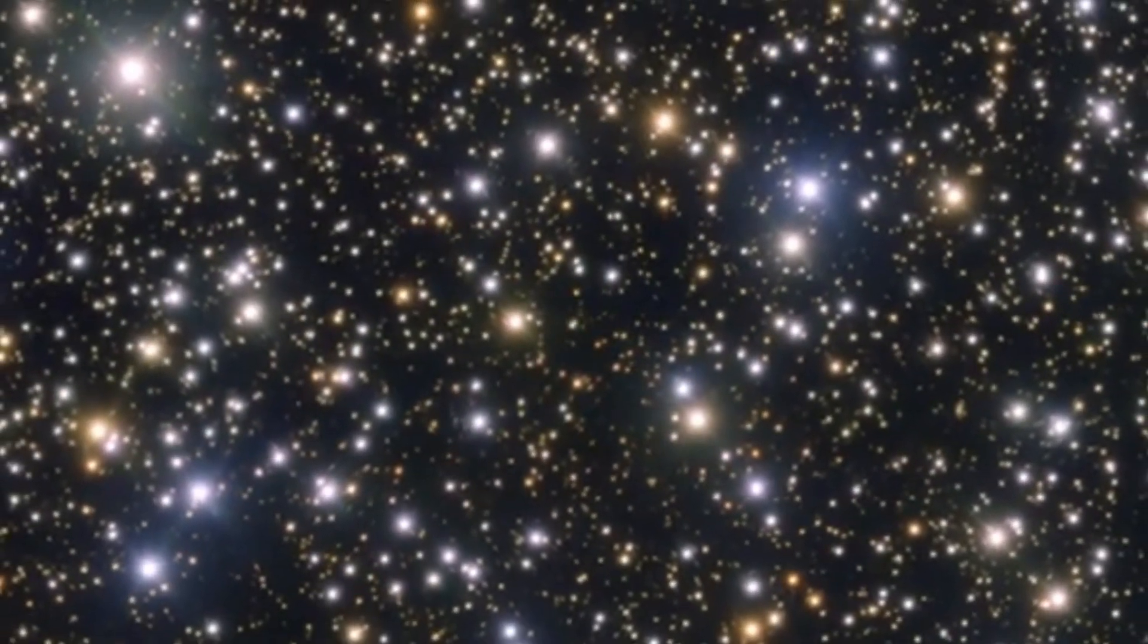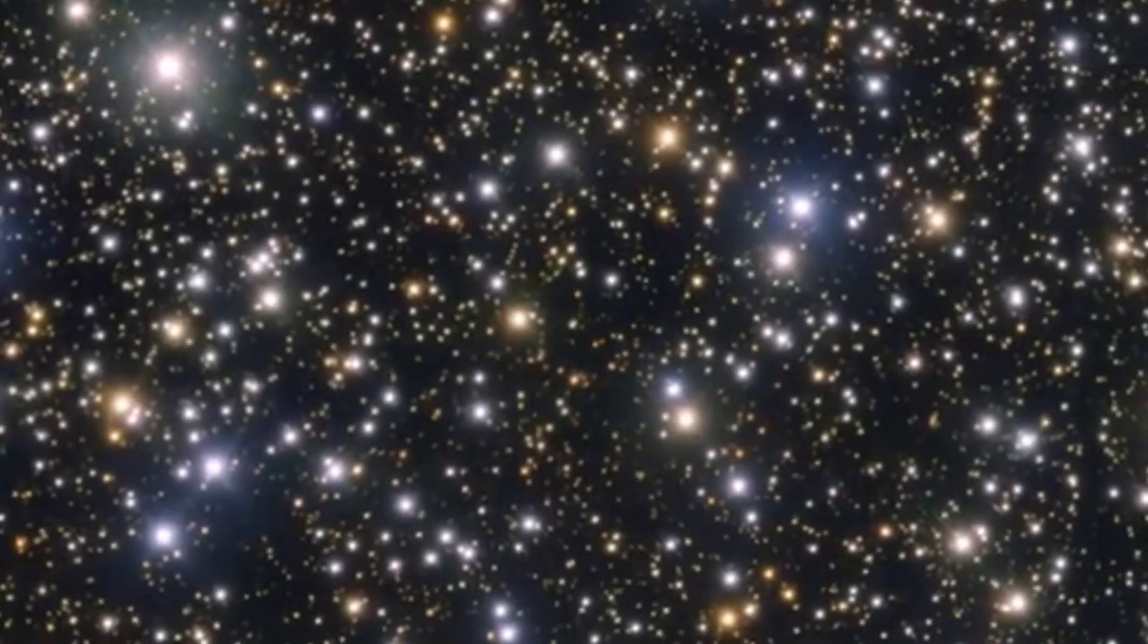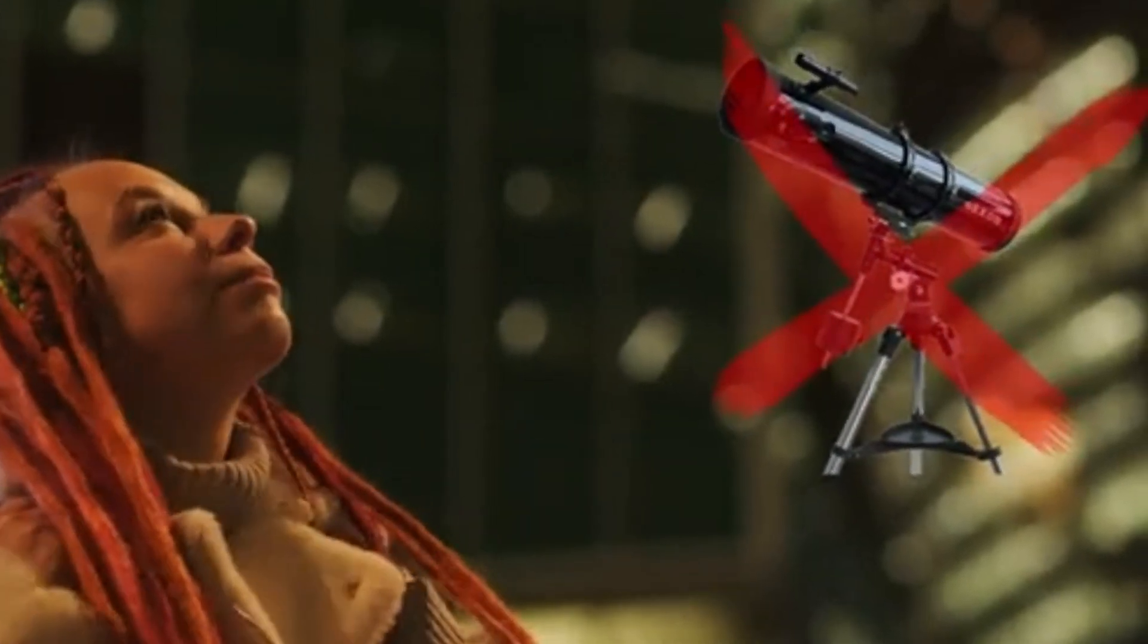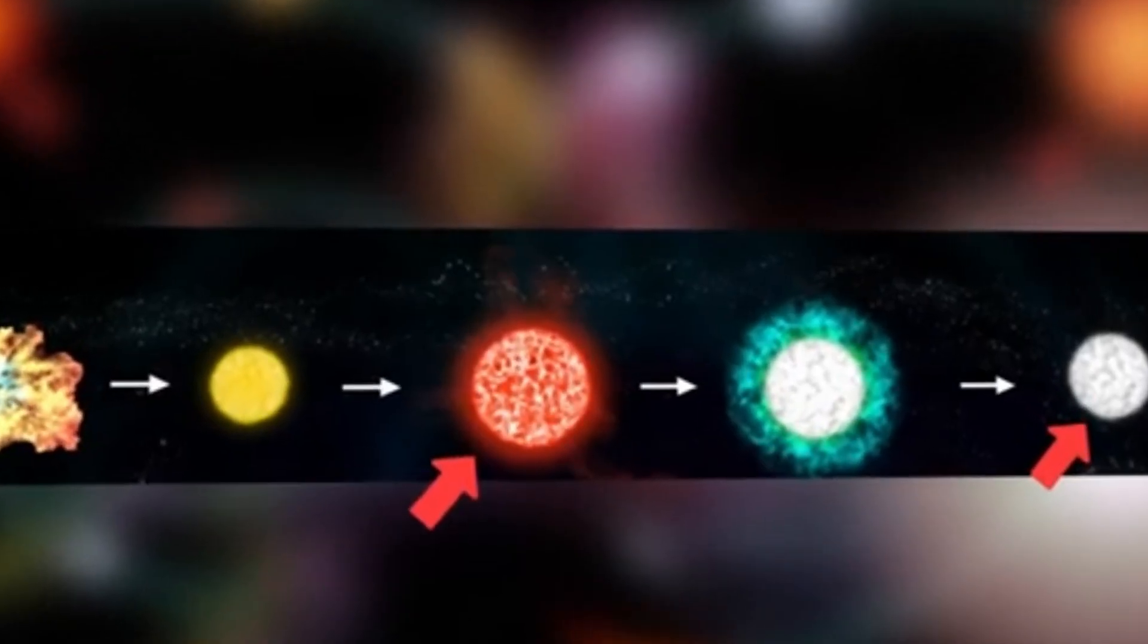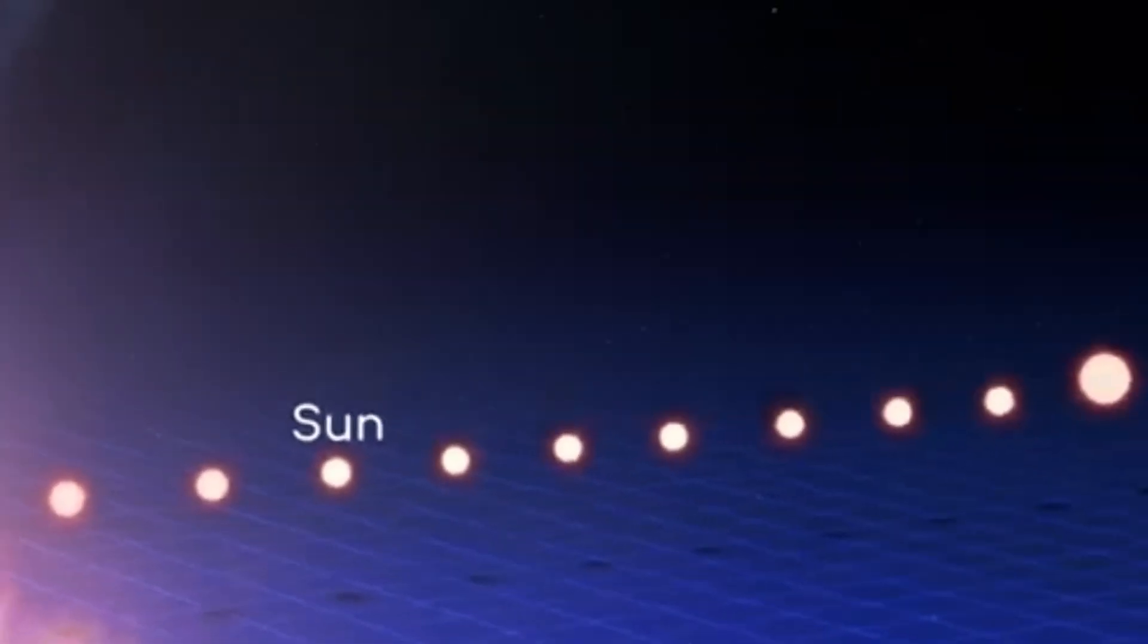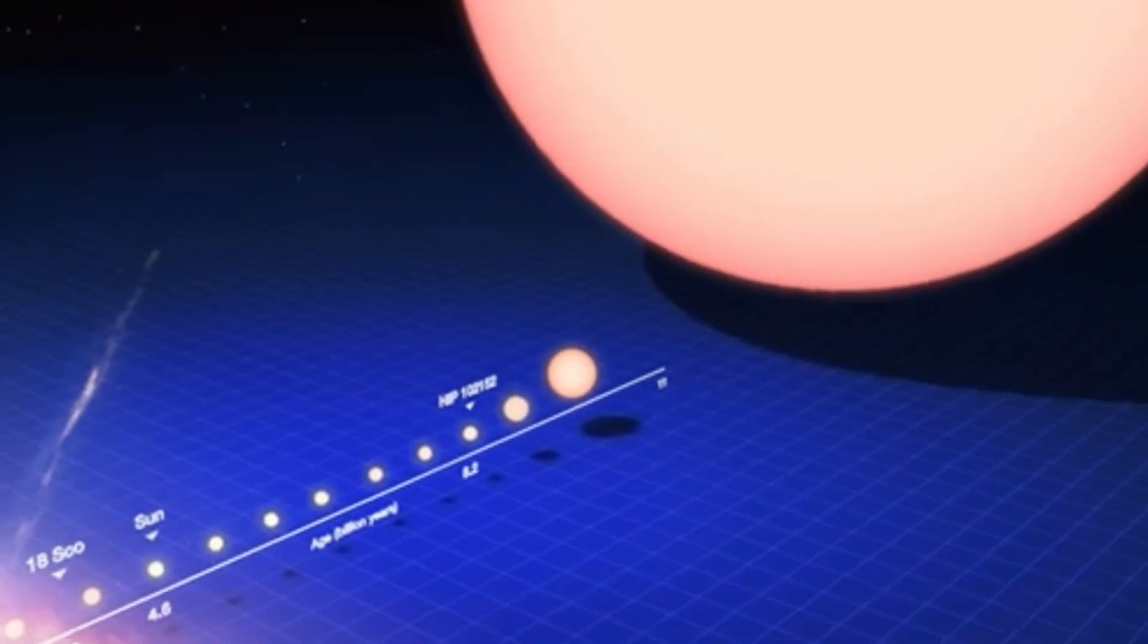In 2024, those of us alive today will have the rare chance to witness this recurring nova explosion with our own eyes, just as Birmingham did over 150 years ago. No telescope or specialized equipment will be necessary to see this event unfold, allowing anyone with clear skies to observe it. The question naturally arises: why does the Blaze Star continue to go nova, and when exactly will it happen this time?